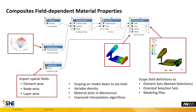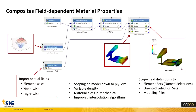첫 번째, Composite PrePost에 대해서 알아보도록 하겠습니다. R19에서 필드 종속 물성 데이터를 Composite 레이업의 특정 레이어에 적용할 수 있게 되었습니다. 이와 같이 가변 소재의 정의는 요소별, 그리고 플라이별 수준에서 수행하실 수 있습니다. 또 Mechanical에서 작성된 Mesh 기반 Named Selection이 이제 Composite 워크플로우에서 지원되었습니다. Element Set, Oriented Selection Set, 모델링 플라이 등에 대한 범위 지정이 가능해졌습니다.